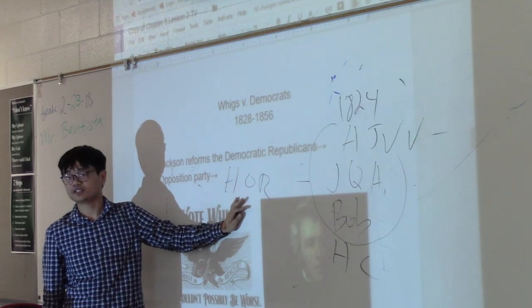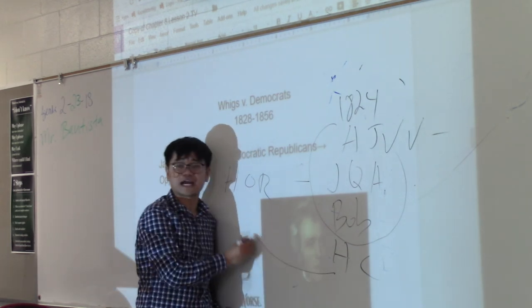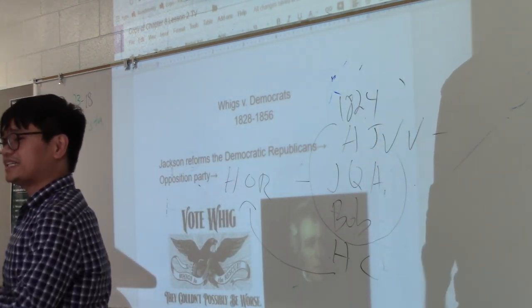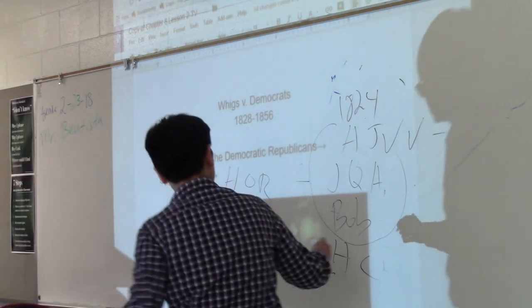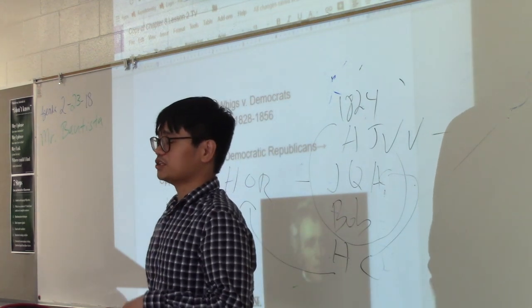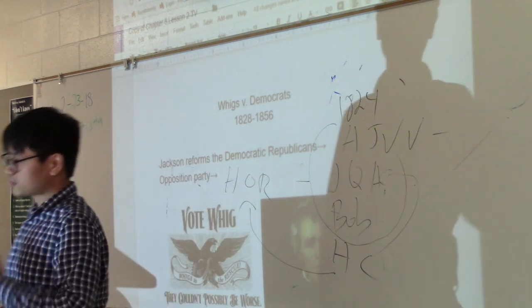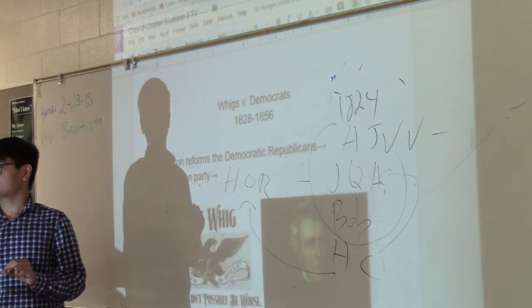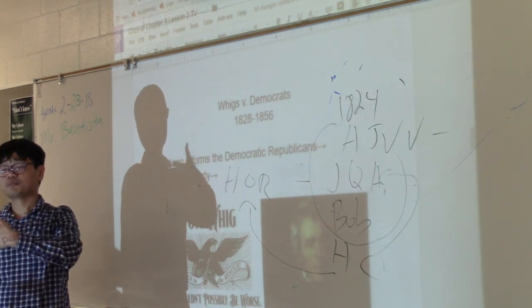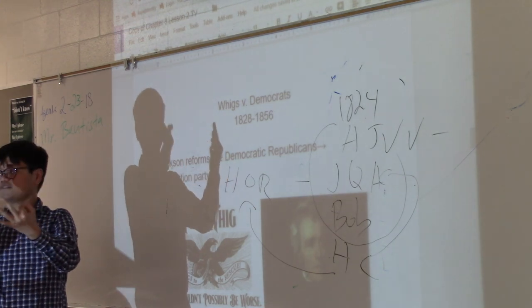Henry Clay, who had no chance of winning since he wasn't in the top three, happened to be the Speaker of the House — leader of the House of Representatives. He went to John Quincy Adams and made a deal: he would use his influence to make his allies in the House elect Adams as president, and in return, once Adams became president, he would make Clay his Secretary of State. Back then, all previous Secretaries of State — Thomas Jefferson, James Madison, James Monroe — had gone on to become presidents, so it was seen as a stepping stone to the presidency.